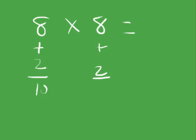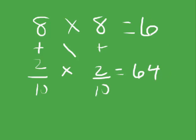So we have 8 times 8 equals. We have 8 plus 2 equals 10, and we have 8 plus 2 equals 10 again. So this one's easy. We've got 8 minus 2 equals 6. And then 2 times 2 equals 4. So the answer is 64.